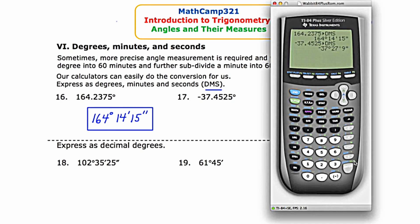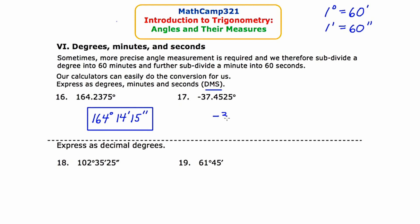Now we get negative 37 degrees, 27 minutes, nine seconds. Negative 37 degrees, 27 minutes, and nine seconds. Now we'll do two questions in which we go backwards.